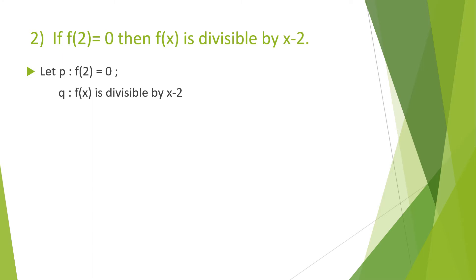Let's consider one more example. The given conditional statement is: if f(2) = 0, then f(x) is divisible by x minus 2. So first write statements P and Q: P is 'f(2) = 0' and Q is 'f(x) is divisible by x minus 2.' The given statement is P implies Q.